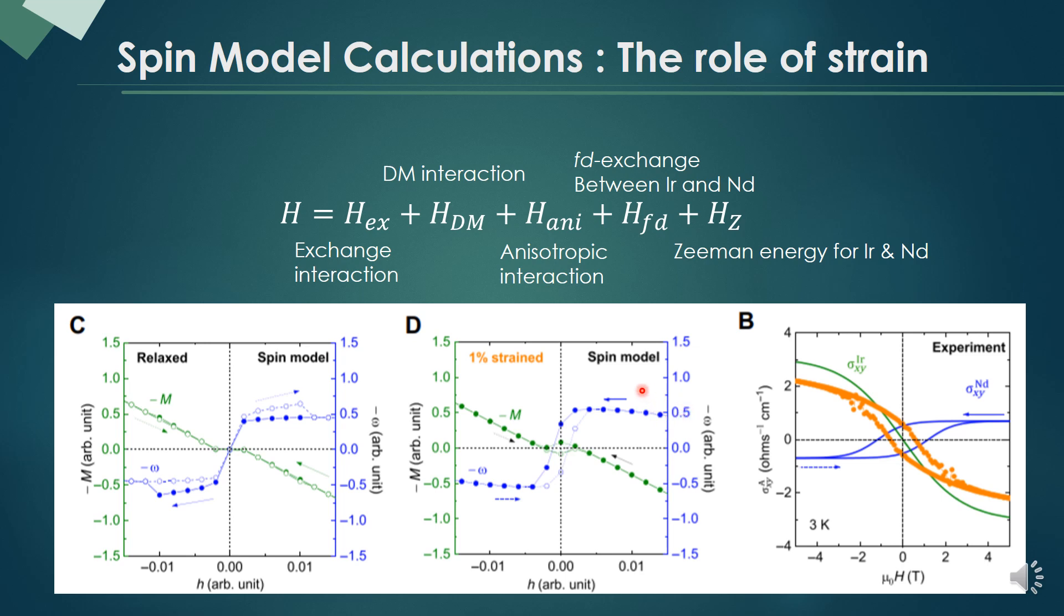Therefore, we clearly see that the strain can control the higher rank of magnetic multipoles and associated octupoles like T1 octupole and its associated anomalous Hall effect.